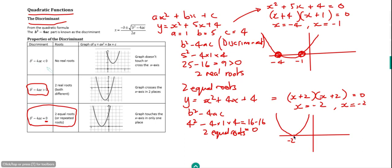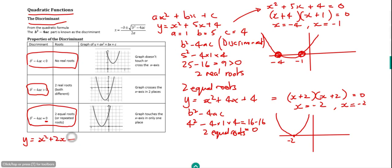Now looking at a case with no real roots. If we have y equals x squared plus 2x plus 5, we'd find we can't factorise it into two brackets. If you try to equate it to 0, you'll find there's no solution — it doesn't equal 0 for any real values of x. If you wanted to sketch it, we could try using the completing the square method.